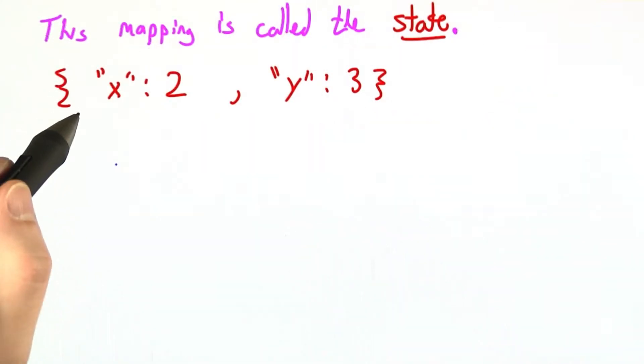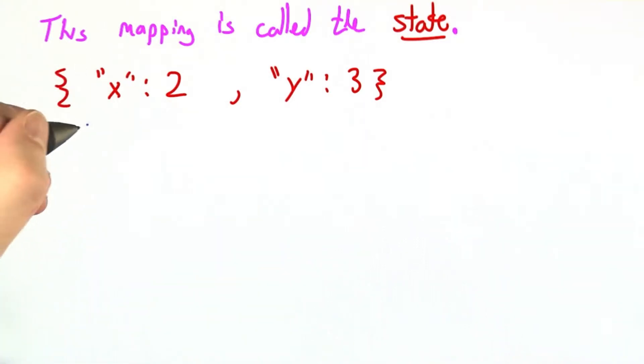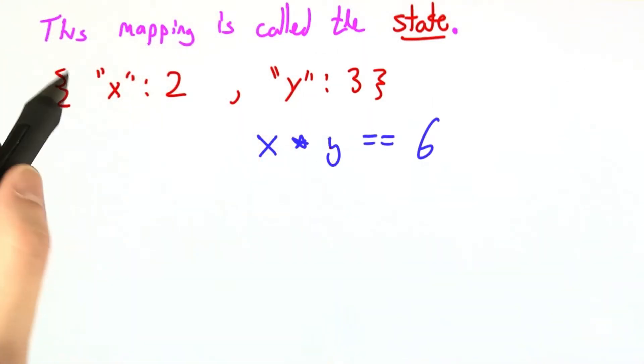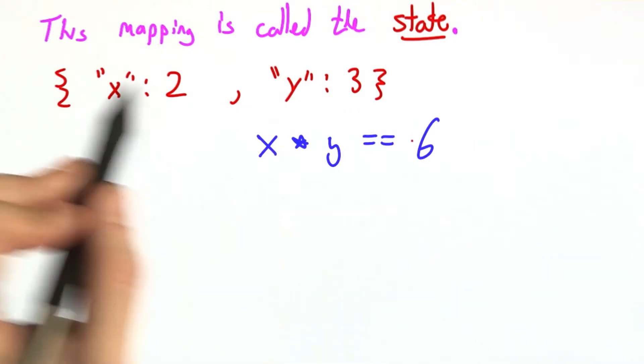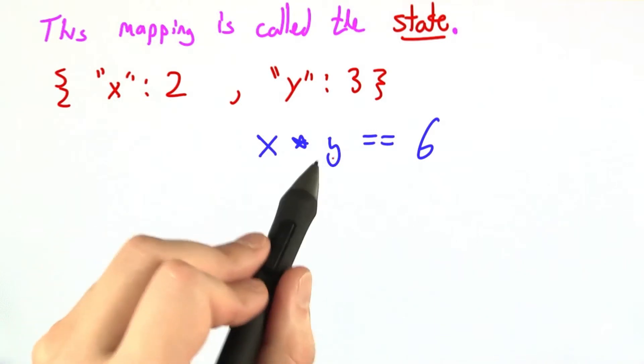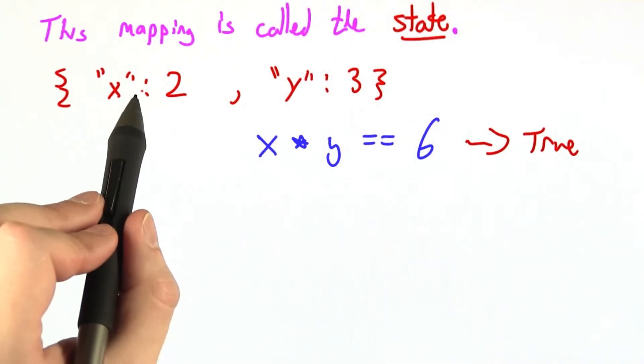So as we hinted earlier, a fairly direct way to do this would be just to use a Python dictionary that maps strings, variable names, to values. If we had something like this, we could easily evaluate x times y in this context, in this state, and determine that it's true for this state. Right now x is 2, right now y is 3, 2 times 3 is 6. So the value of this expression is true if this is the state of the world.